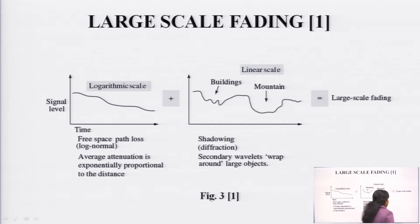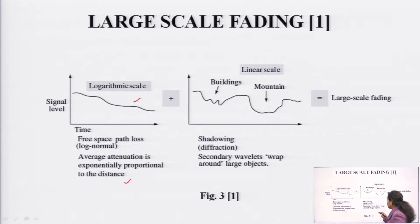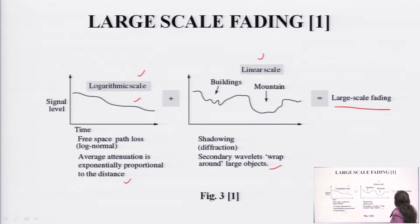This graph shows large scale fading — signal strength versus time on a logarithmic scale. The average attenuation is exponentially proportional to the distance. This is the shadowing and diffraction, where secondary wavelets wrap around large objects. This is on linear scale, this is on logarithmic scale — these are buildings and this is a mountain. When both are added together, we have large scale modeling.